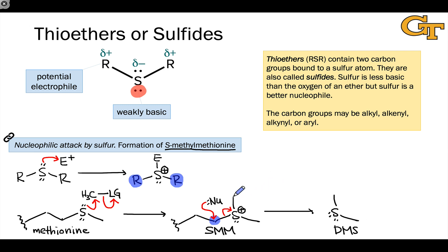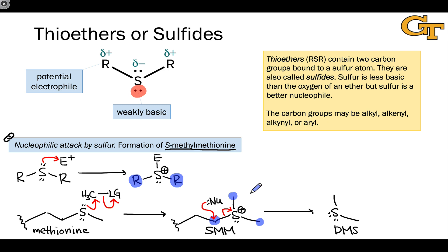S-methylmethionine is also important as a methylating agent in biochemical systems, because the methyl groups linked to the positively charged sulfur atom are electrophilic. This can be a way to carry around electrophilic methyl groups in biochemical systems without using leaving groups that are too strong, like bromide or chloride.